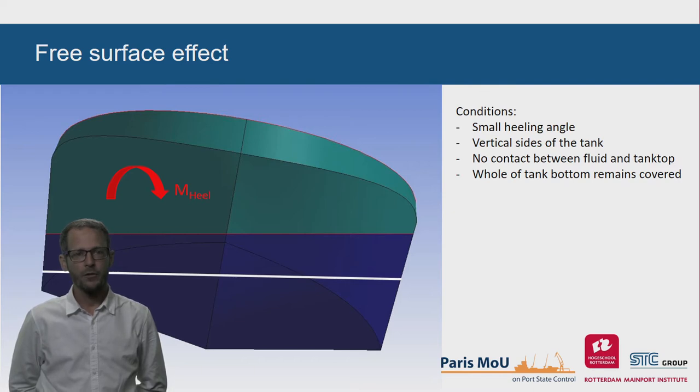A reduction of GM can easily be calculated if the following conditions are met. The heeling angle is small. The tank has vertical sides. When heeled, there is no contact between the fluid and the tank top. And when heeled, the whole of the tank bottom remains covered with the fluid.